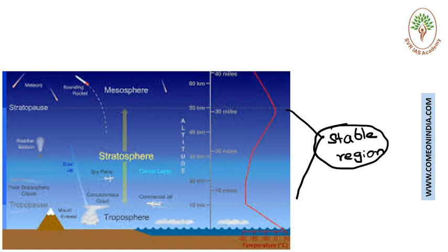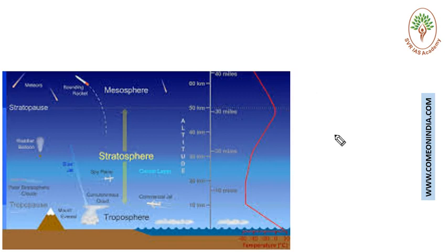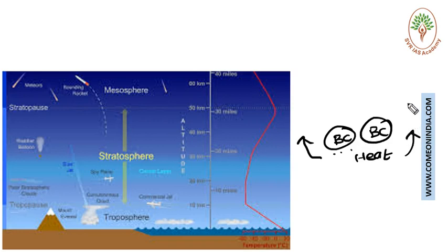When black carbon particles deposit, they absorb heat and warm the surrounding air. When air gets warmer, it becomes lighter, so lighter air will tend to move upwards. This process is called self-lift.